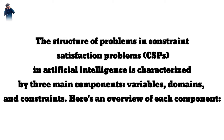The structure of problems in constraint satisfaction problems, CSPs, in artificial intelligence is characterized by three main components: variables, domains, and constraints. Here's an overview of each component.